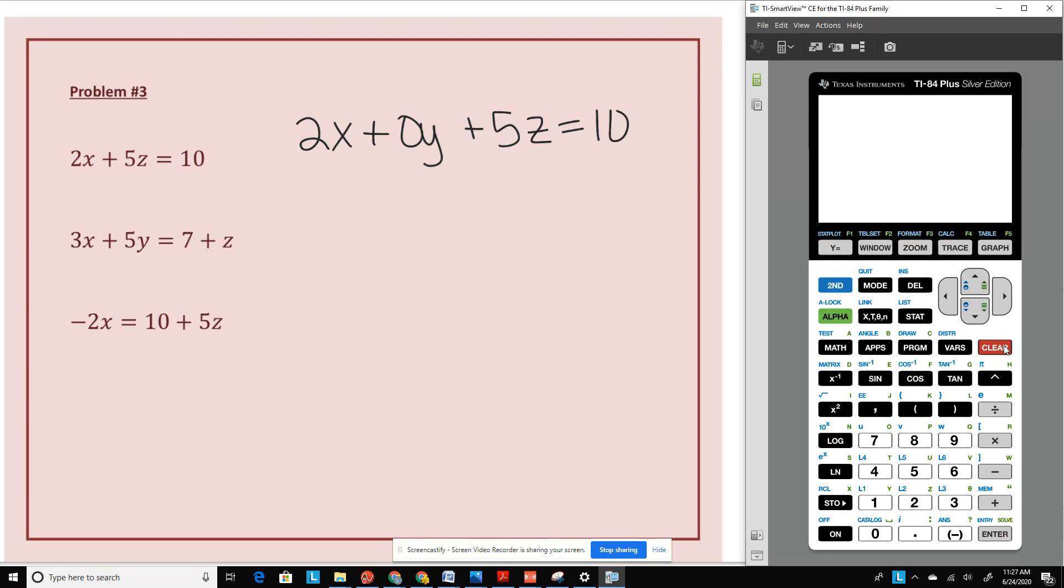The second equation, I need to get rid of this positive z here. So I'm going to subtract it on both sides. And the third equation, I am going to subtract the 5z. But also notice that I do not have a y again.